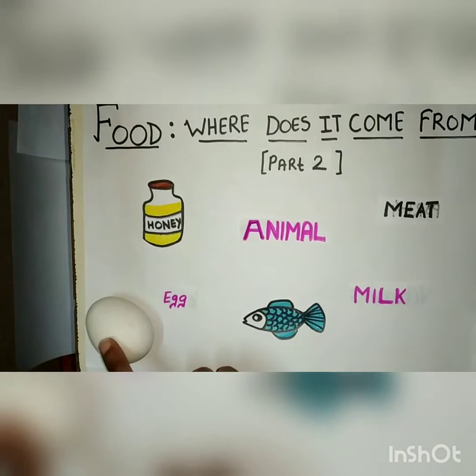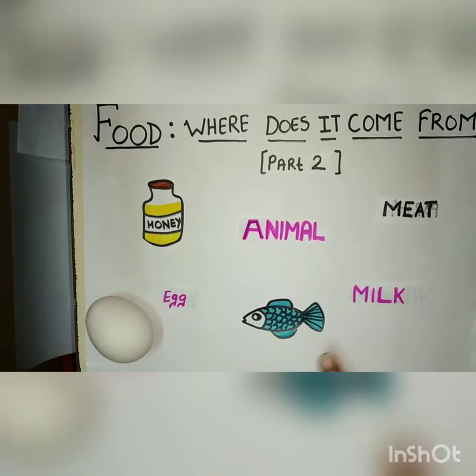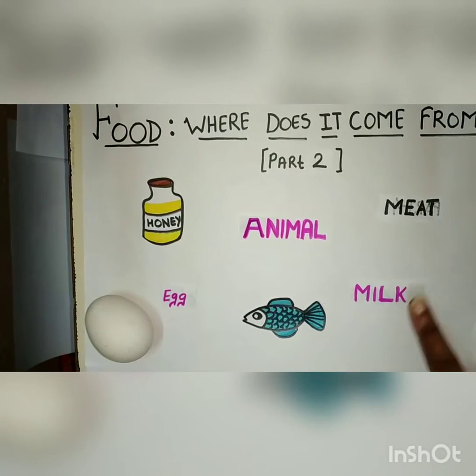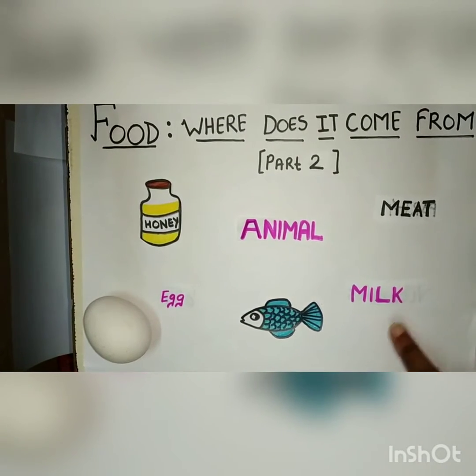The food sources we get from animals include honey, egg, fish, milk, meat, and milk products.